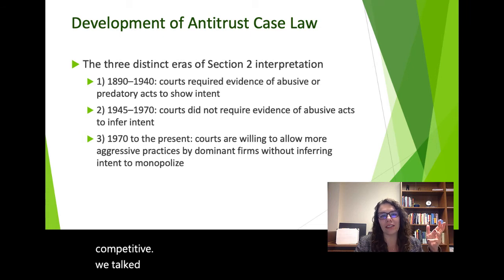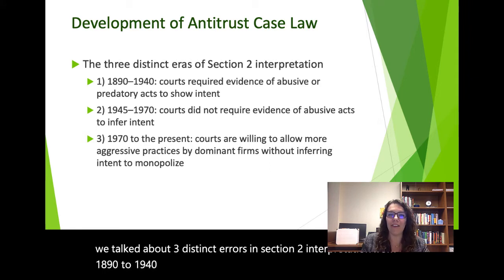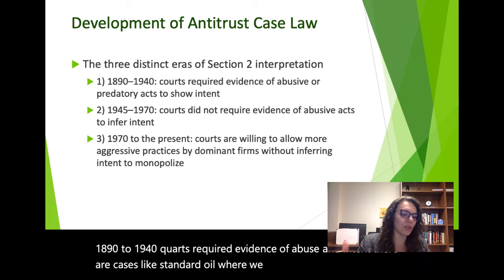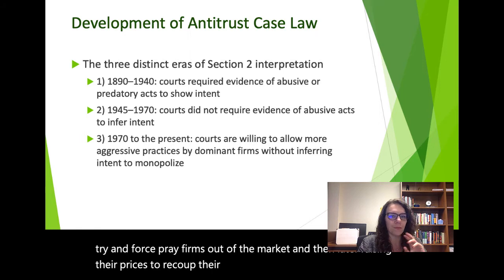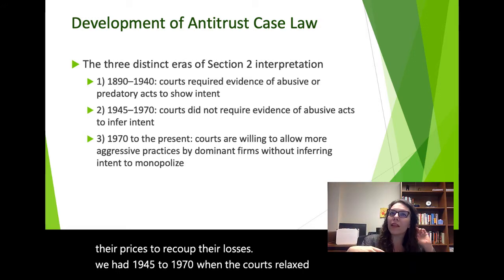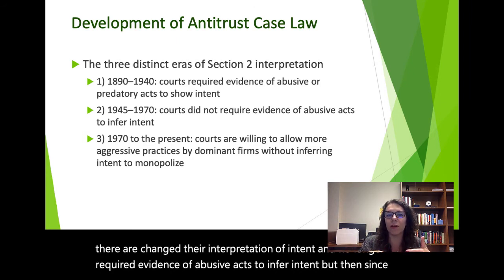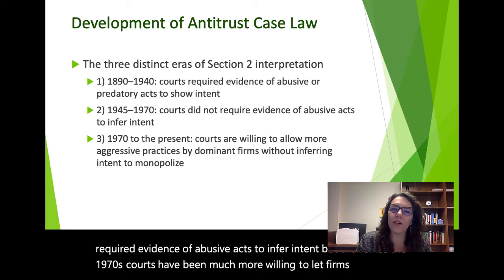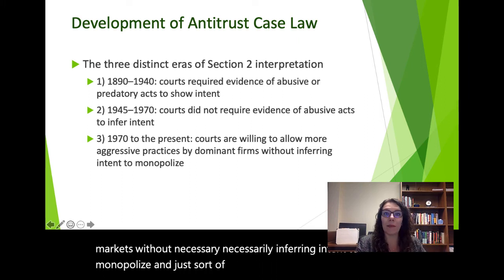We talked about three distinct eras in Section 2 interpretation. From 1890 to 1940, courts required evidence of abuse and intent — cases like Standard Oil where firms lowered prices to force prey firms out, then raised prices to recoup losses. From 1945 to 1970, courts no longer required evidence of abusive acts to infer intent. Since the 1970s, courts have been much more willing to let firms dominate markets without inferring intent to monopolize.